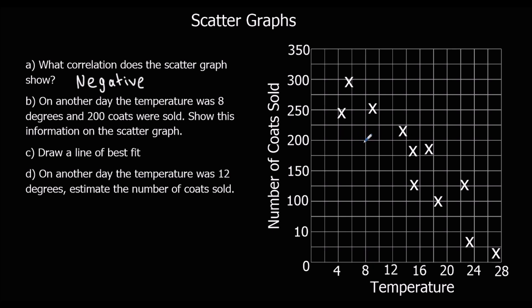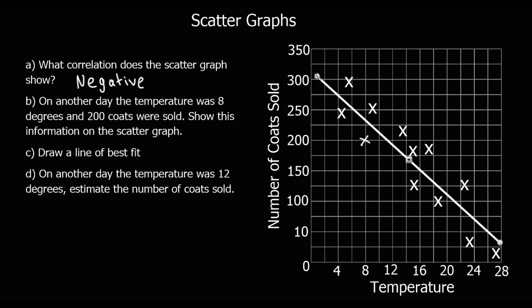On another day the temperature was 8 degrees and 200 coats were sold. We're going to show this information as an X at position 8, 200. Then we draw a line of best fit — we need to draw a line roughly going through the middle of the points. Here I can get 6 points on both sides. We're trying to get the least distance from the X's to the line, so the line that best fits these points. With 6 on both sides going roughly through the middle in the same direction, that's a good line of best fit.